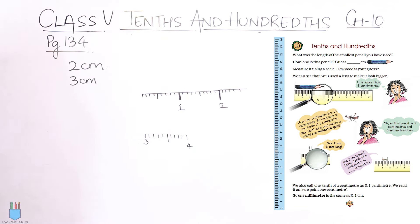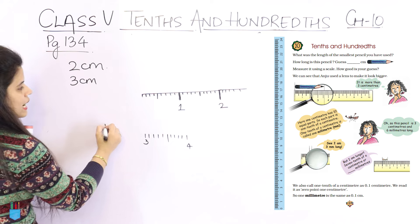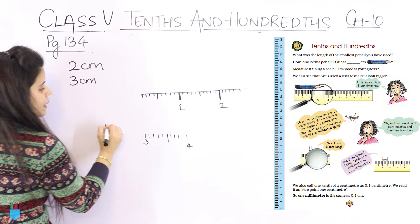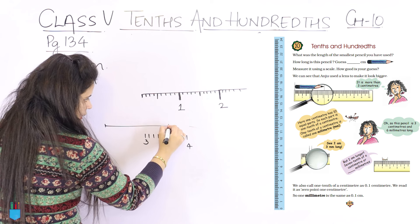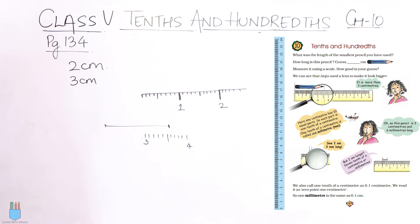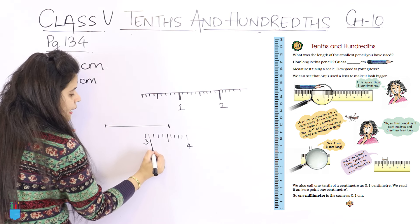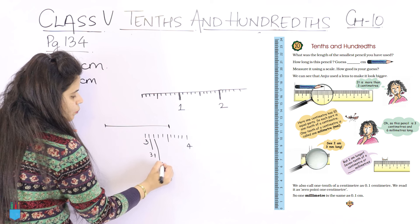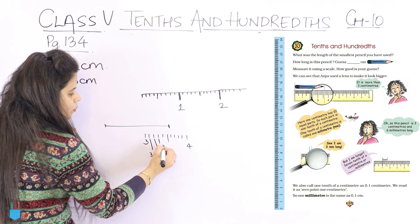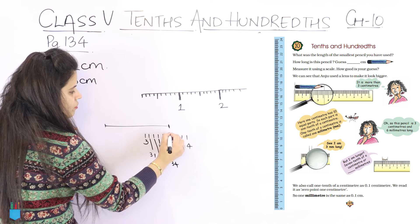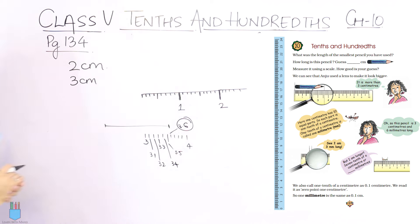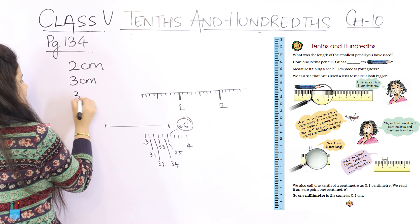Now, when you measure your pencil starting from 0, it will end here. So what does it mean? Either it is 3 or 4. How do we write this? This is 3.1, this is 3.2, this is 3.3, this is 3.4, this is 3.5, this is 3.6. When we measured the pencil, it came to 3.6 cm.